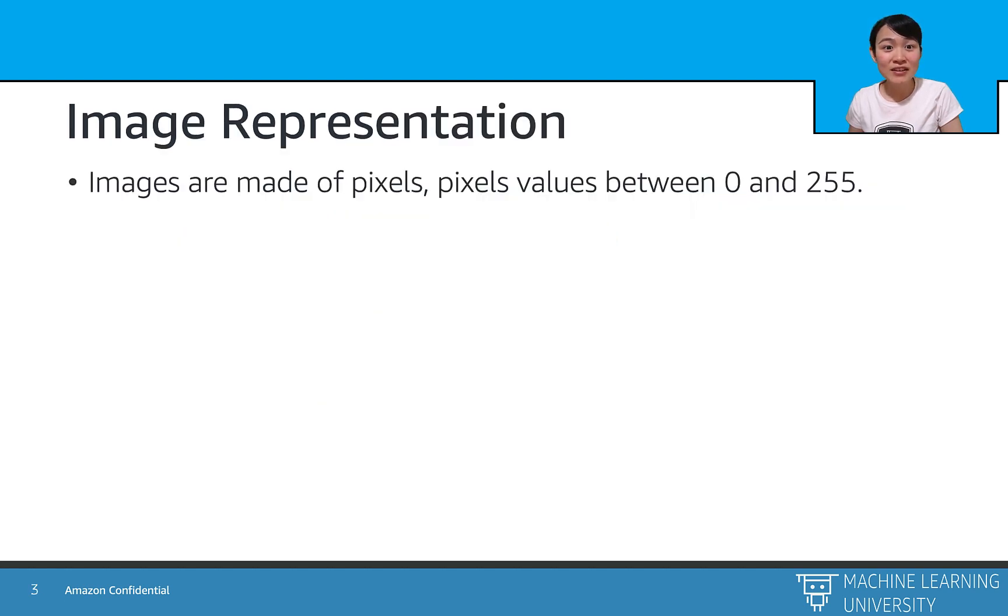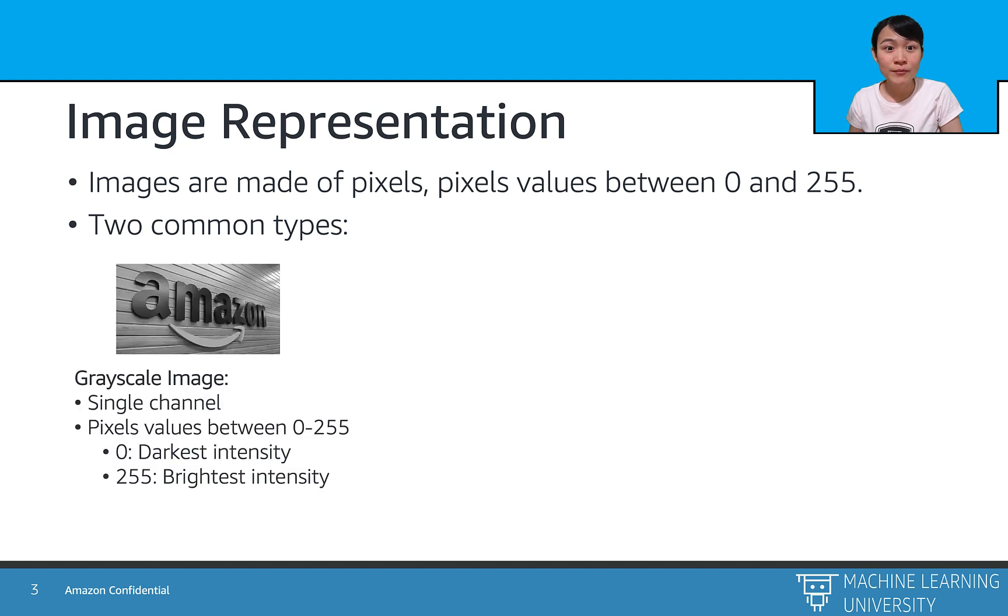Images are made of pixels, and the pixels are represented by some numbers between 0 and 255. There are two common types of images, the grayscale and the colorful scale. The grayscale images have single channel, which means each pixel is represented by one number between 0 and 255. The smaller the value, the darker the pixel.